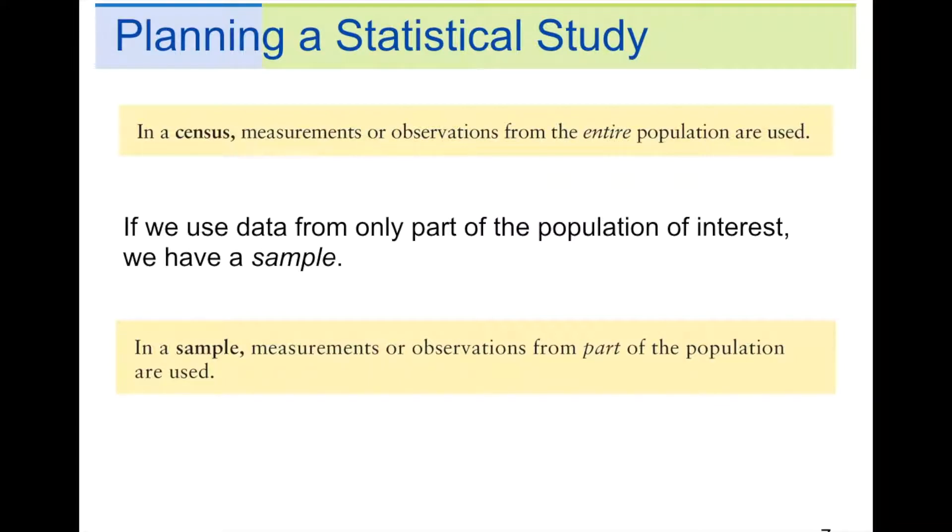Usually, what you have though is a sample, and we've talked about samples a lot already. They're only from part of the population. So, if you're only using part, you're saying it's a sample, but if you used everybody or every object in what you're studying, then it's a census.